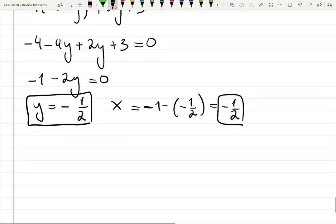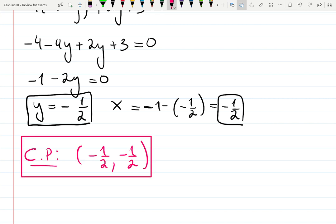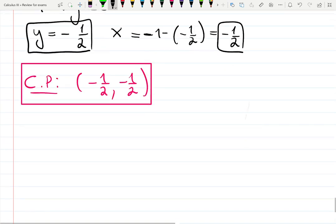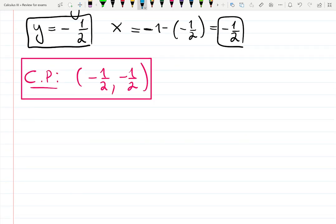So the only critical point we found is minus one half comma minus one half. This is a candidate for the global minimum. The other candidates are coming from the parabola, which is our domain restriction.